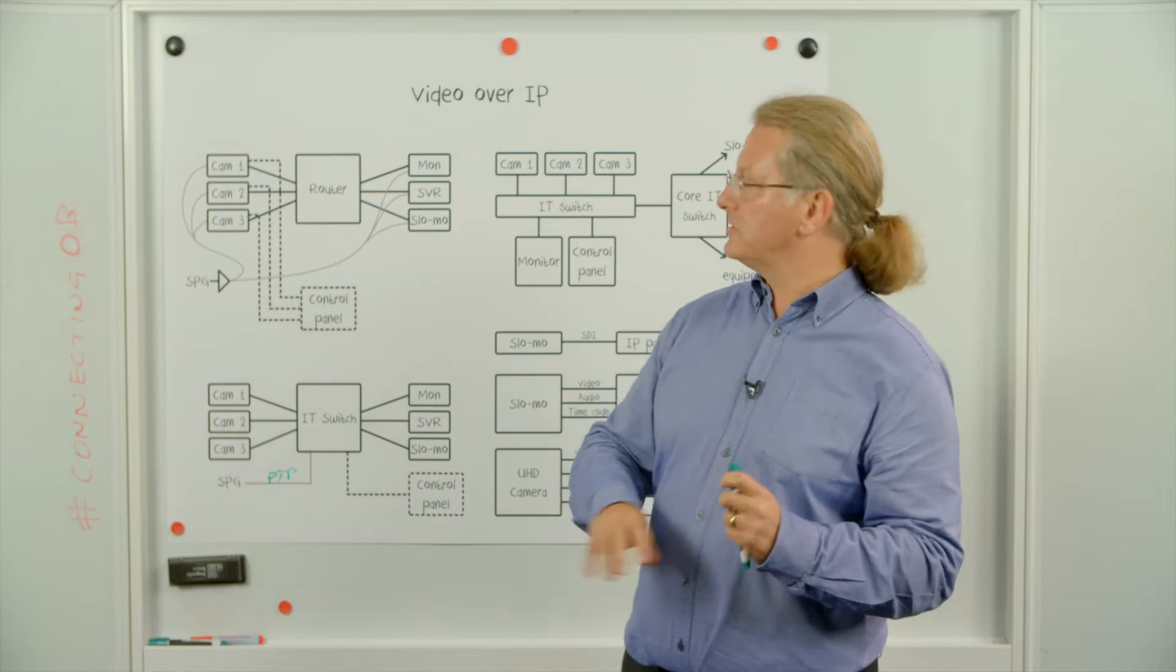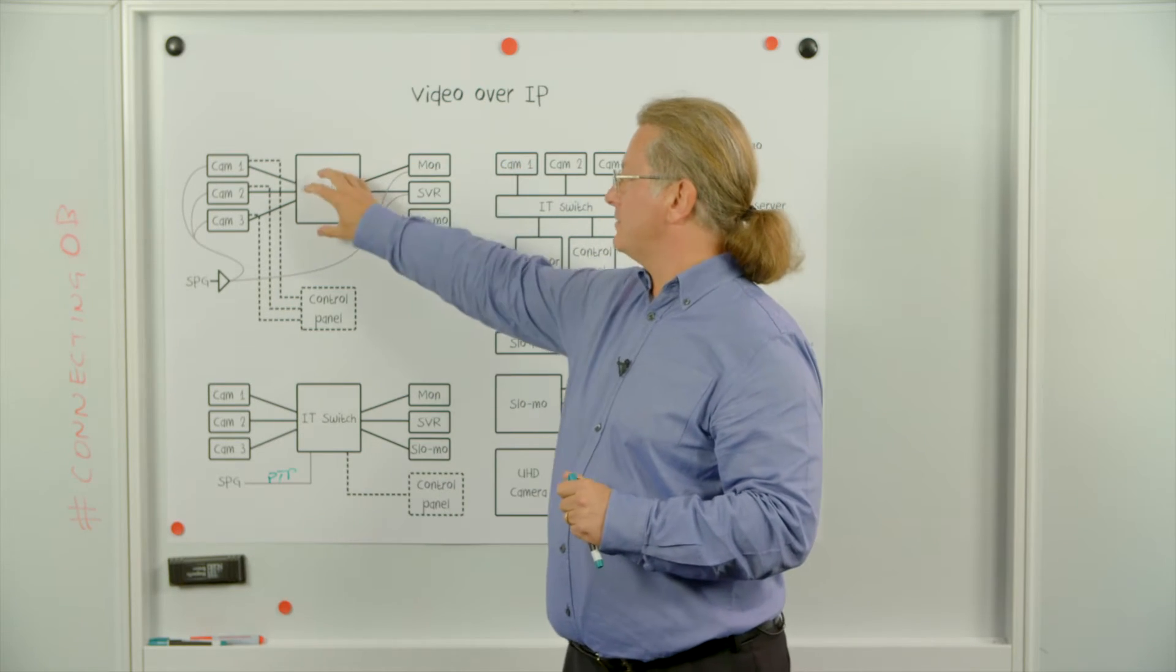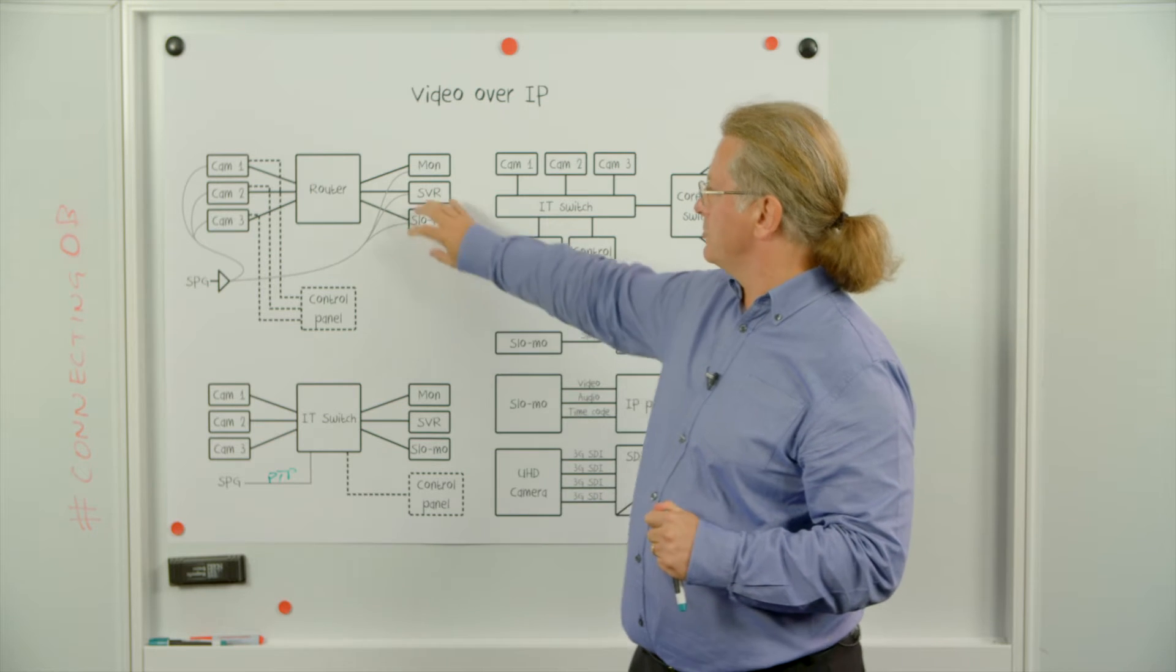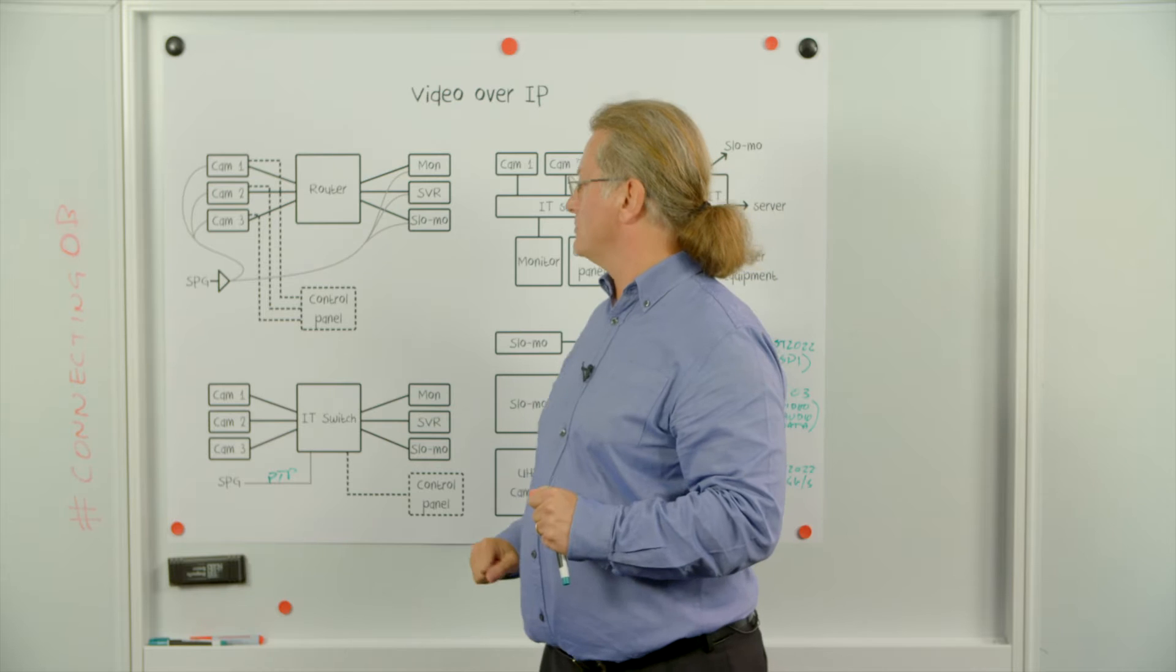Traditionally, an OB would have a large central SDI router with all the cables running from the equipment into it. Alongside these cables would be the reference distributions and yet more cables for the control.